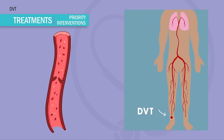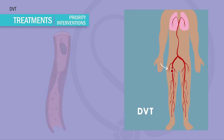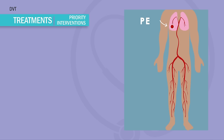Alright, so now that we know what's wrong with our patients in a DVT, what are we going to do about it? The goal of treatment for a DVT revolves around preventing the dislodgement of the clot. If the clot loosens or floats away, it can get vacuumed right into the heart and then into the lungs, causing that deadly PE — that blood clot in the lung.